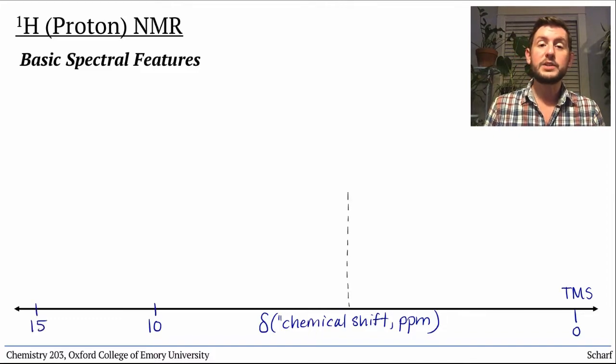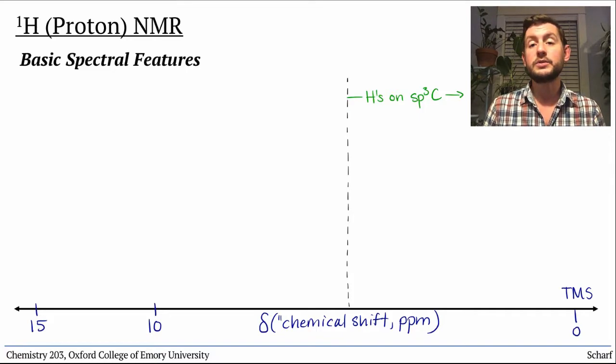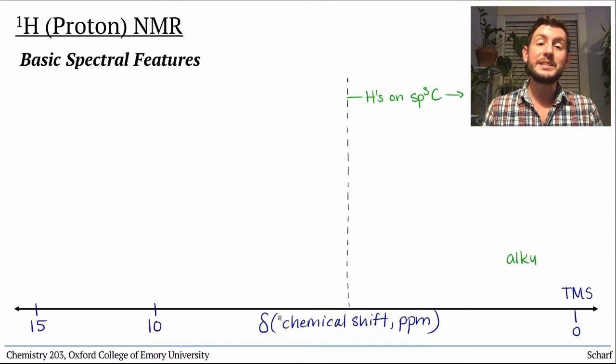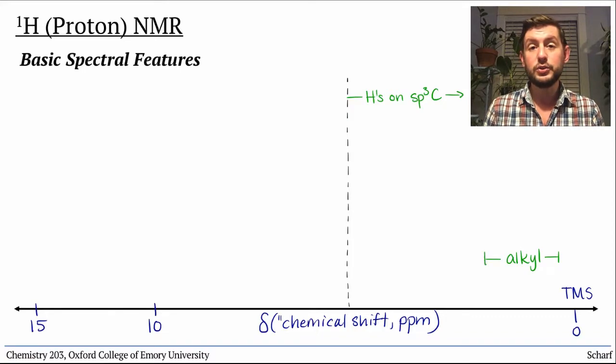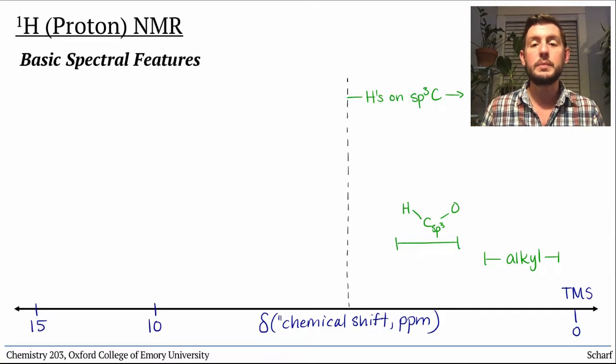Hydrogens attached to sp3 carbons are typically between 0 and 5 ppm, with higher chemical shifts being seen for hydrogens closer to more electronegative atoms. Hydrogens on simple alkyl groups are usually between 0.5 and 2 ppm, and hydrogens on sp3 carbons that are directly bonded to oxygen are usually between 3 and 4.5 ppm.